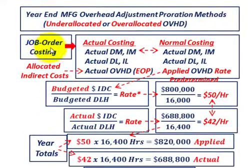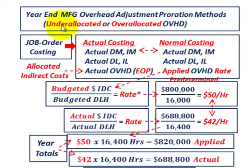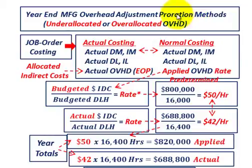What we're going to be going over here is job order costing, where we're going to be looking at the year-end manufacturing overhead adjustments that we have to make for either under-allocated or over-allocated overhead that we used on these jobs. We're going to look at two different alternative methods here for the proration methods.